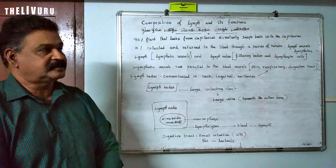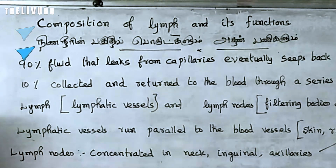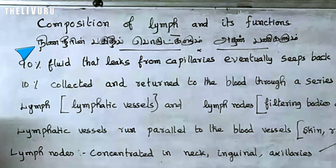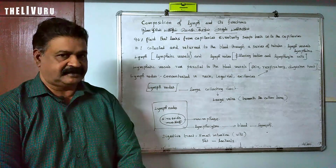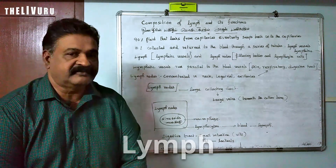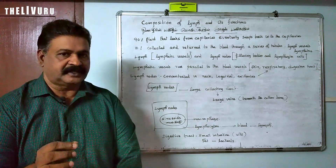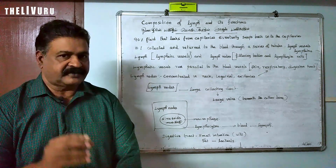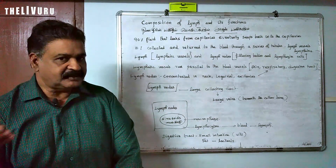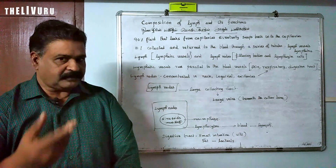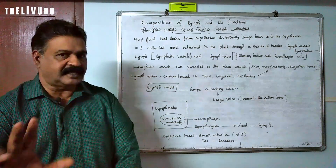In this video, we are going to see the composition of lymph and its functions. Before entering into this chapter, we should know what is meant by lymph. Lymph is a fluid — it is a liquid which is formed from blood and eventually it enters back into the blood.